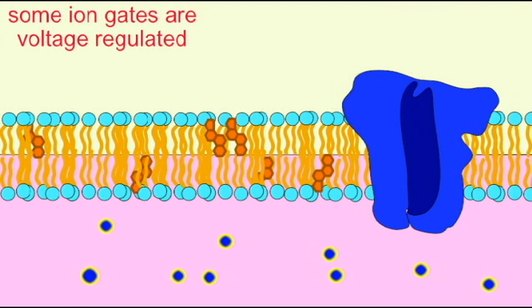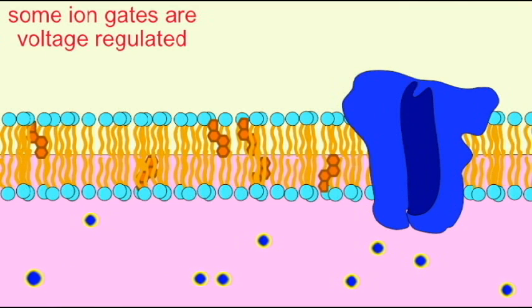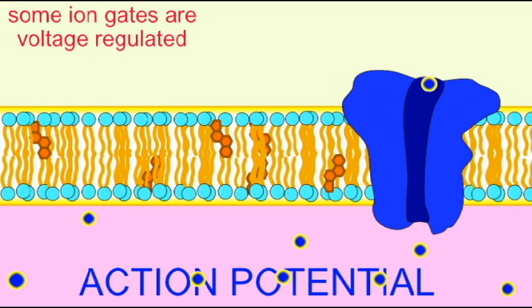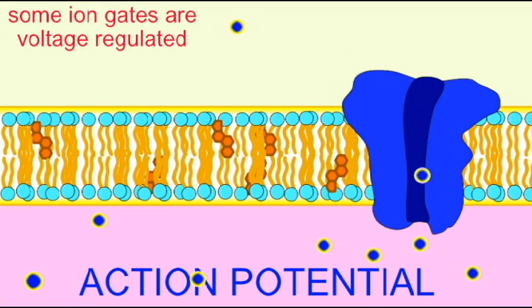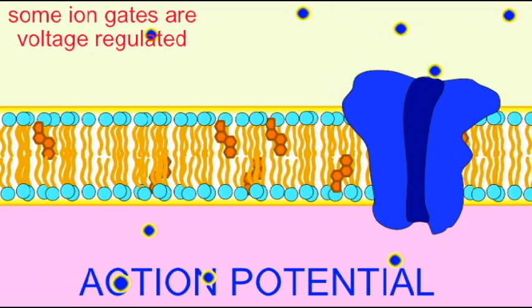At rest this ion gate is closed, but during an action potential the gate opens and allows potassium ions to cross the cell membrane. This then has an effect on the electrical difference across the cell membrane.